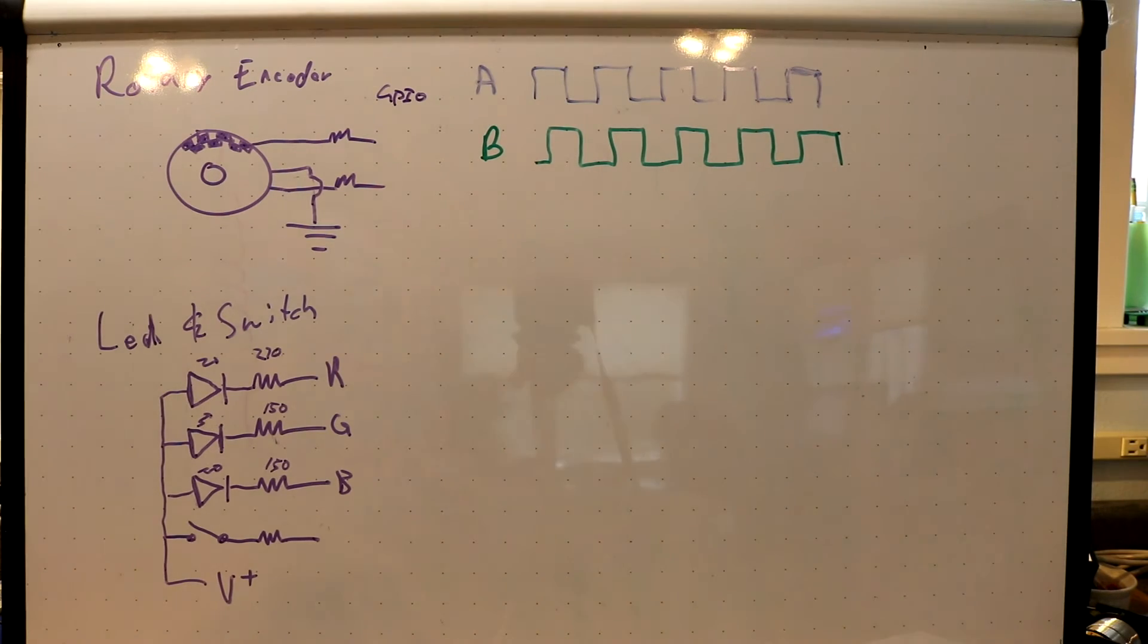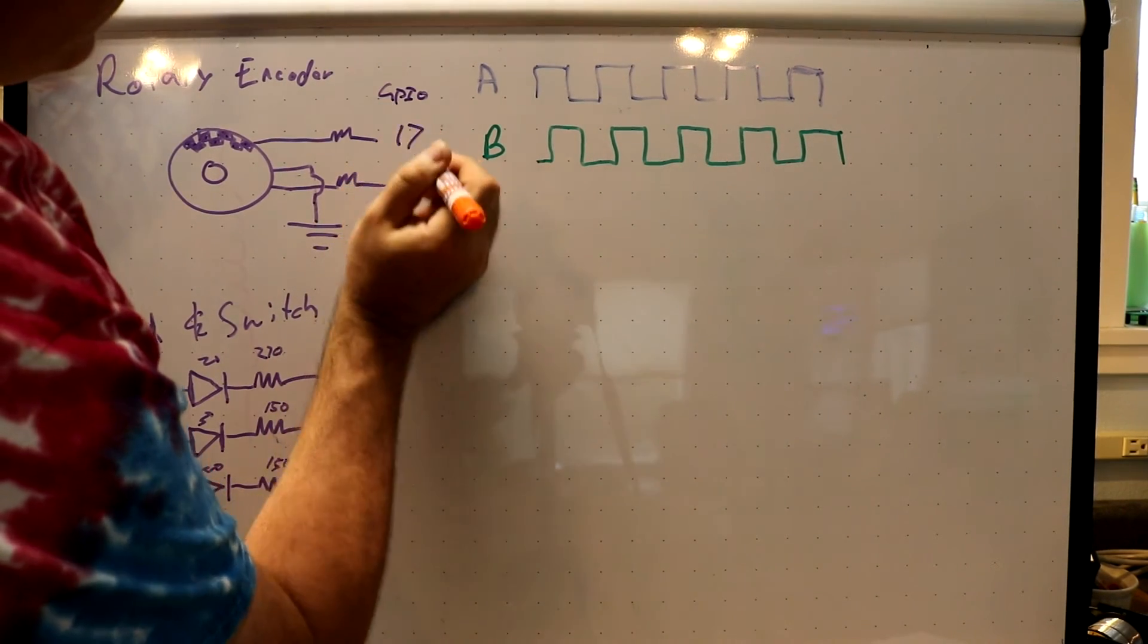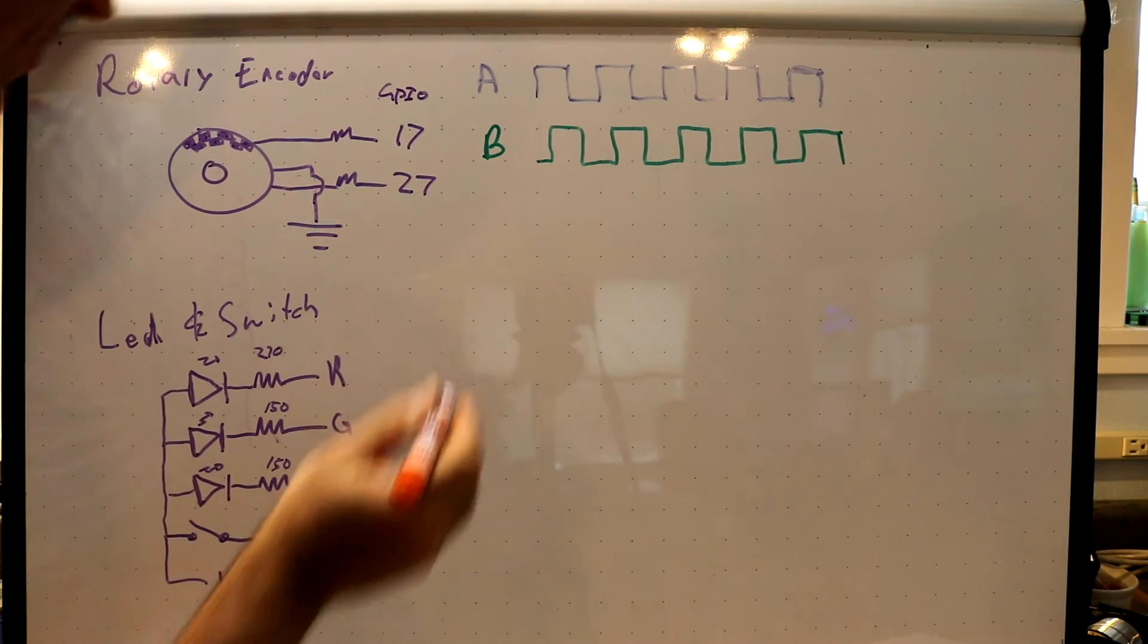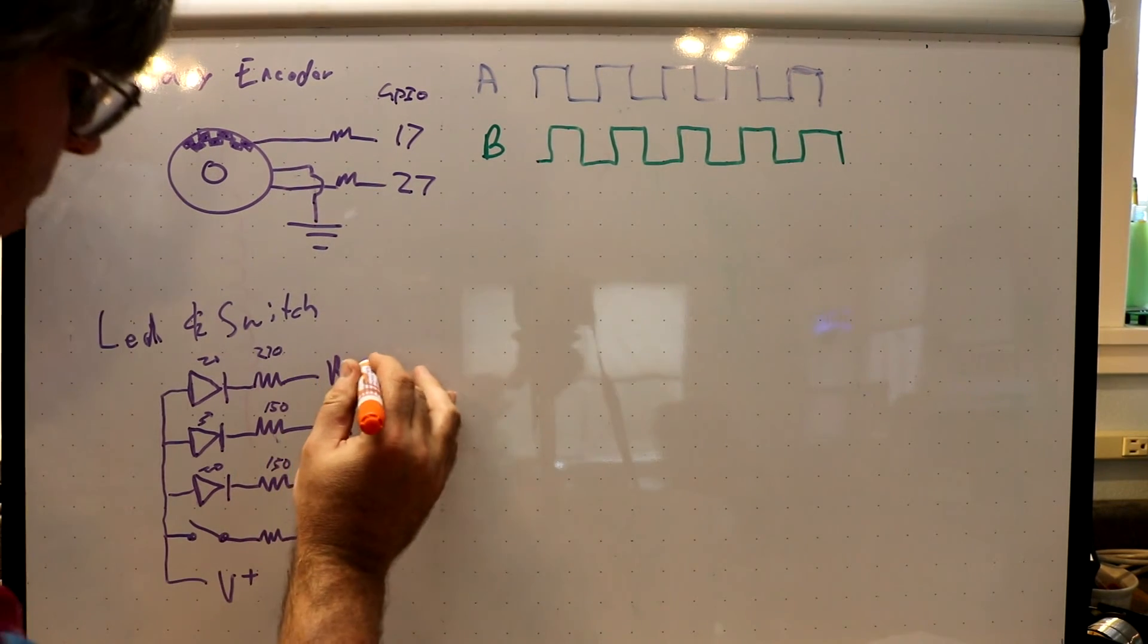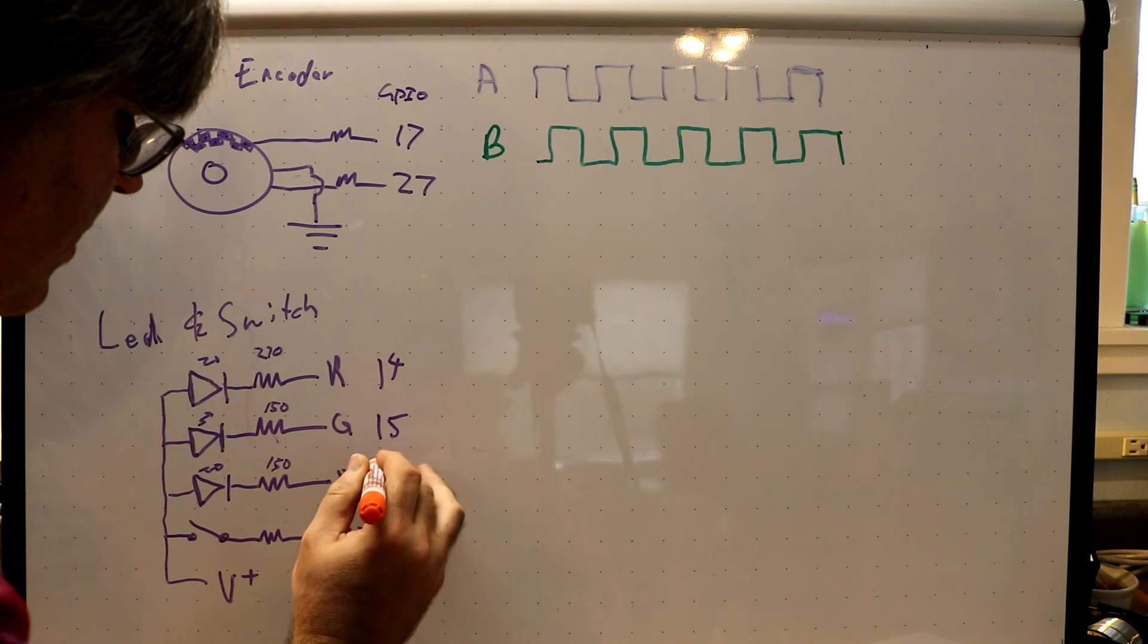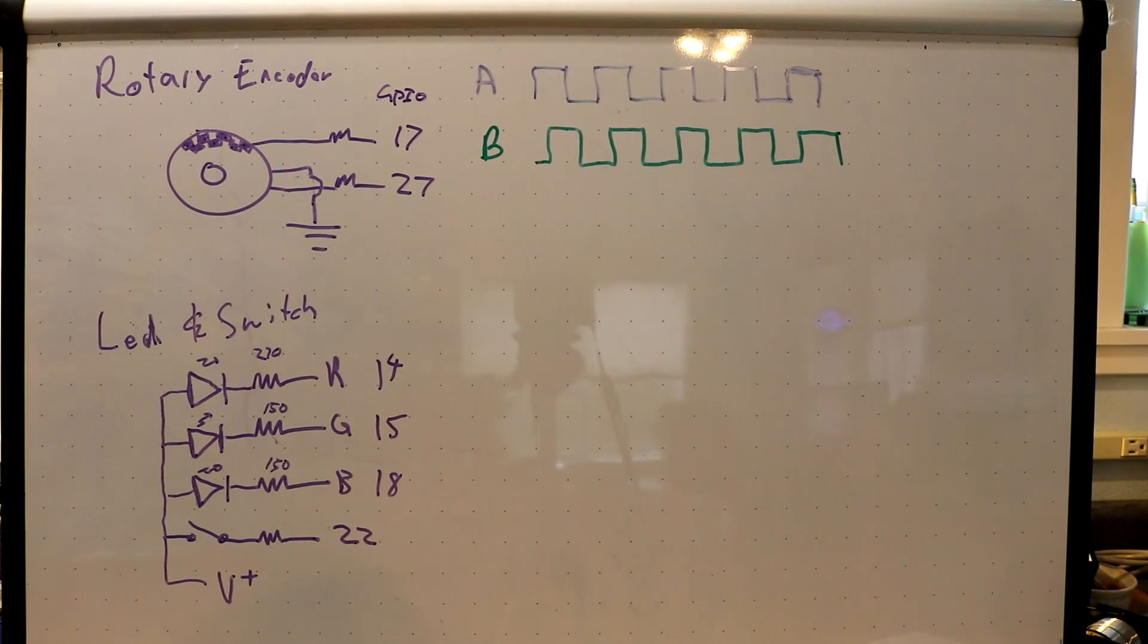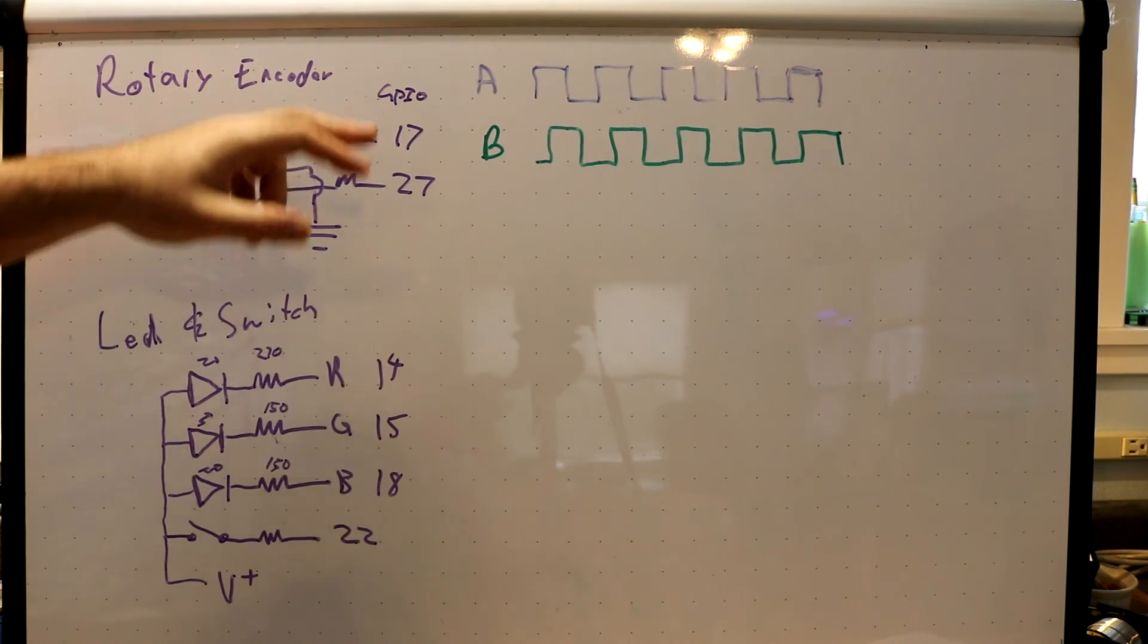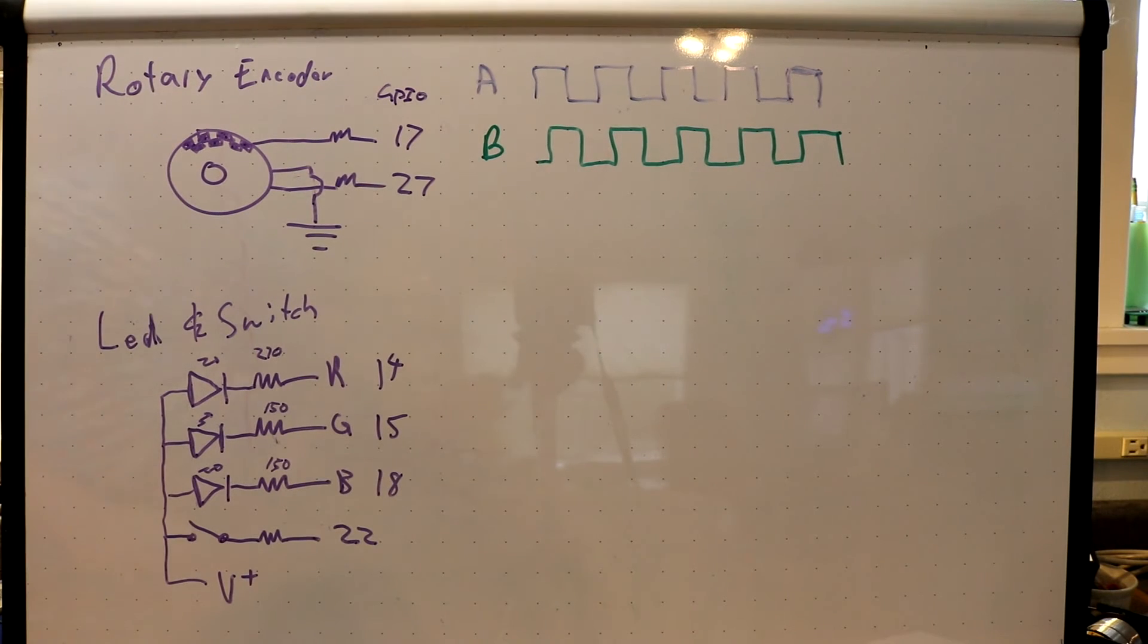So I connected these to GPIO on the Pi of 17, 27, 22, and then 14, 15, 18. I ended up using a total of six GPIO pins on the Raspberry Pi.